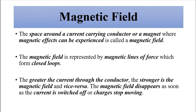So what is a magnetic field? It is the space around a current-carrying conductor or a magnet where the magnetic effects can be felt — it can be experienced. It is represented by magnetic lines of force, and these magnetic lines of force form closed loops.